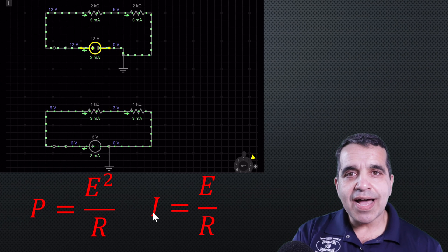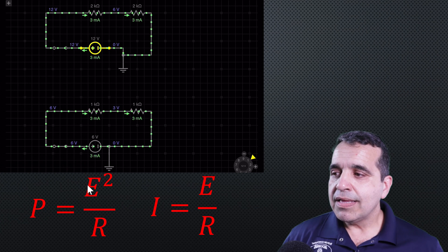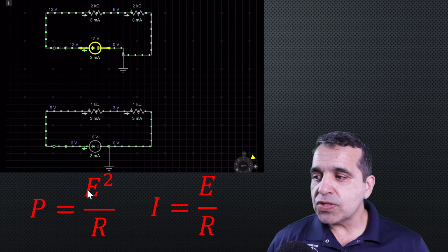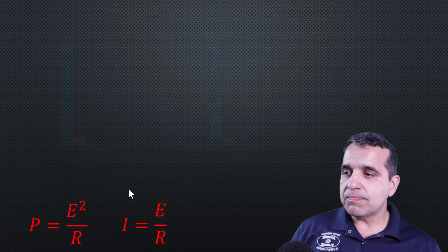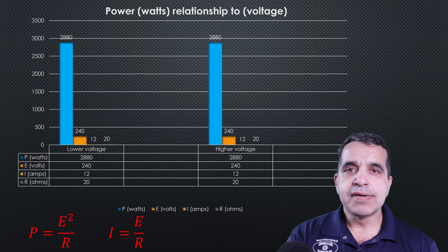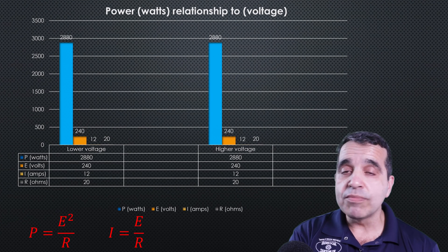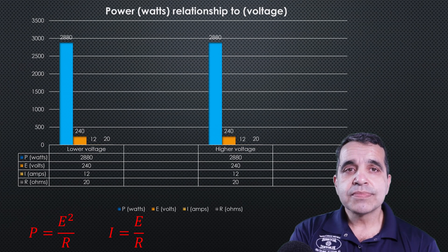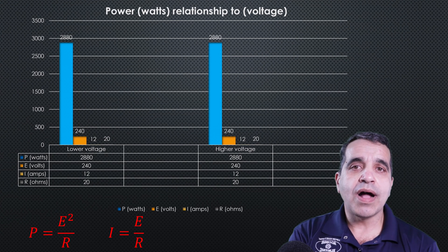So with that in mind, let's look at this formula, P equals E squared over R. P is directly proportional to the square of the voltage. Let me bring up a chart. And here in this chart, I have two circuits. They're both 240 volts. They both have 20 ohms of resistance. And they're both consuming about 12 amps of power. And they're both producing 2,880 watts of work.